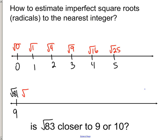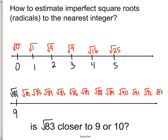So is radical 83 closer to 9 or 10? Here's 82. Here's 83. And as you can see, it's going to take some time to build up to radical 100, which would be a 10. But I don't need to go that far.